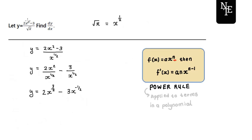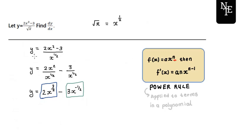Now we've expressed our given function in a different form — rewritten it in a form that lets us apply the power rule. So our first term is 2 times x to the exponent 3 over 2, and the second term is 3 times x to the exponent negative one half. Now that we've identified our terms, we can take the derivative. Because our function is defined as y, the notation that tells our marker we are working with the derivative is dy/dx.